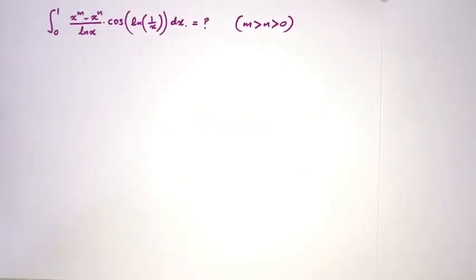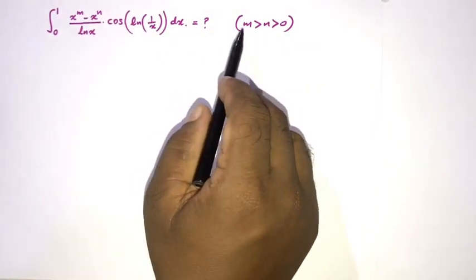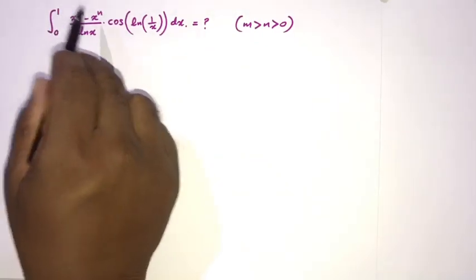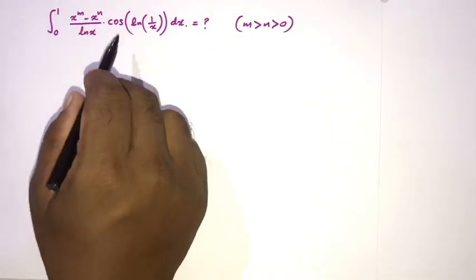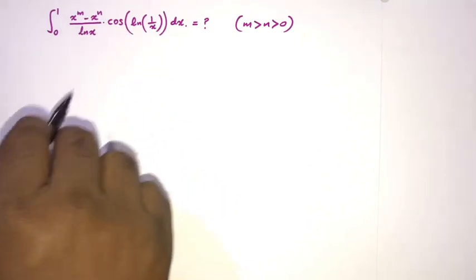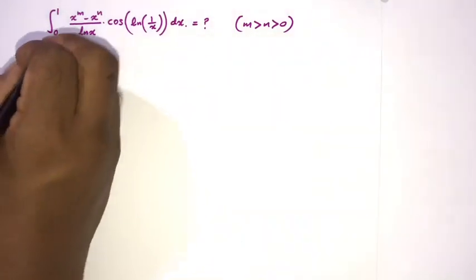Welcome to the Mathematics and My channel. In this video we are going to solve this interesting integral, where m is greater than 2, n is greater than 0, and the integrand is x to the m minus x to the n, over natural log of x times cosine of natural log of 1 over x, dx.